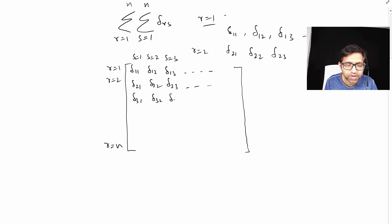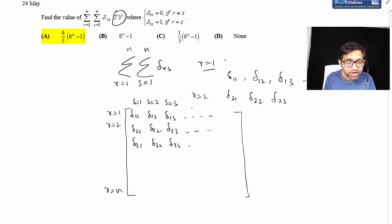Now look at the question. The condition given about delta will simplify this greatly. When r not equal to s, delta value is zero. When r equals s, delta value is one. The question becomes much easier.